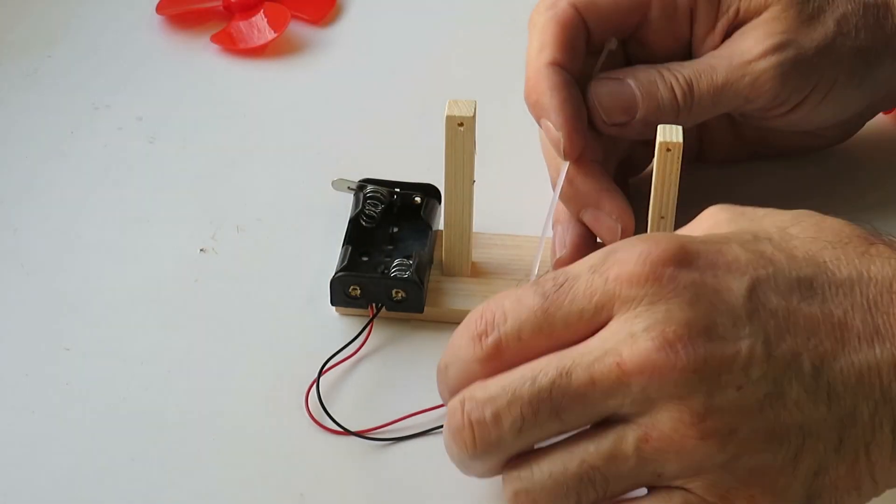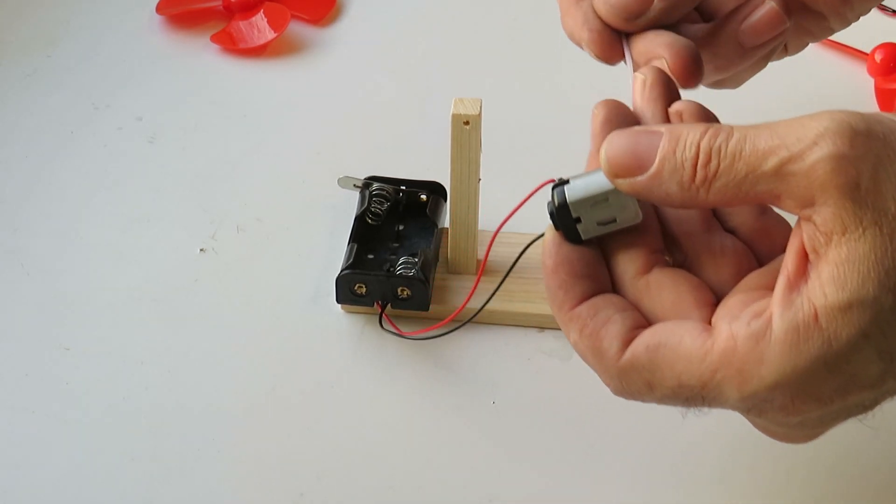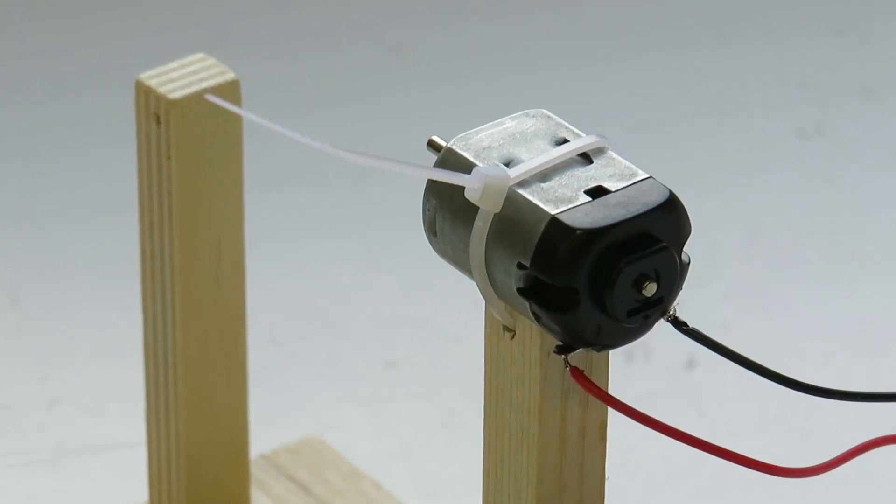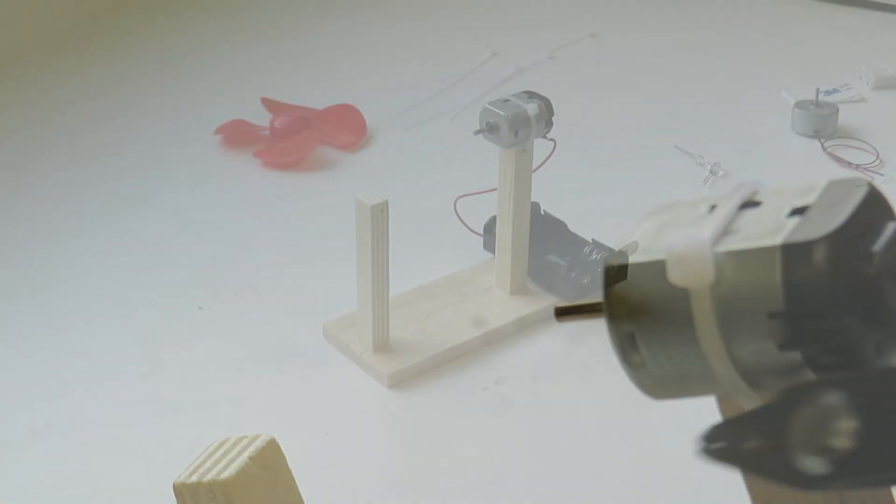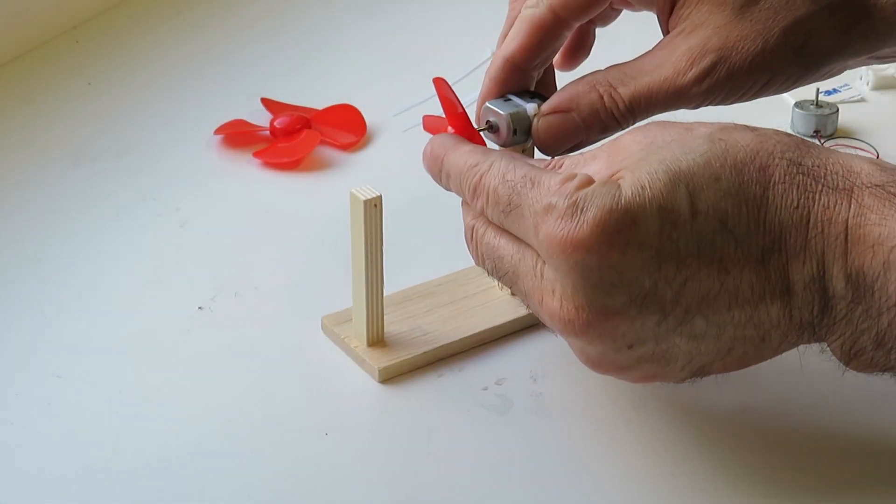Next thing to do is just to put this motor on top of this post with a zip tie running through it just to clamp it down. So with that motor in place we can now put the first propeller on.